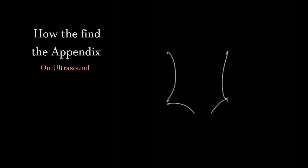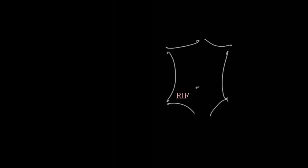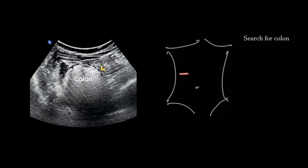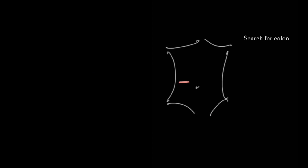Finding the appendix can be very challenging in many patients, maybe because of obesity or its variable locations. Here is a generalized approach: we'll start with finding the colon on the right side of the abdomen, which will usually be filled with air artifacts.